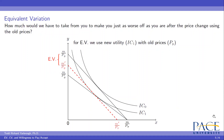The second type is equivalent variation (EV): how much would we have to take from you to make you just as worse off as you are after the price change, using the old prices? We know what happens when the price of good Y goes up — there is economic damage, you are worse off. So the question for EV is: how much would we have to take from you originally to make you now as worse off as you would be after the price actually changed? Here we look at the new lower utility but consider the old prices.